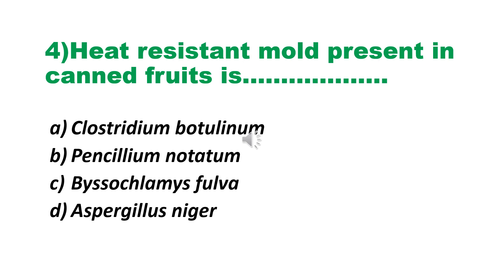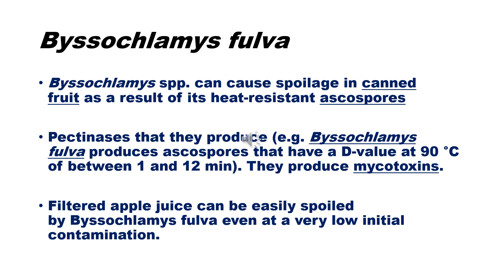Question number 4: Heat resistant mold present in canned fruits is — A. Clostridium botulinum, B. Penicillium notatum, C. Byssochlamys fulva, D. Aspergillus niger. The answer is Byssochlamys fulva. Byssochlamys species can cause spoilage in canned fruit as a result of its heat-resistant ascospores and the pectinase that they produce. Byssochlamys fulva produces ascospores that have a D-value at 90°C of between 1 and 12 minutes. They produce mycotoxins, and filtered apple juices can be easily spoiled by Byssochlamys fulva even at very low initial contamination.